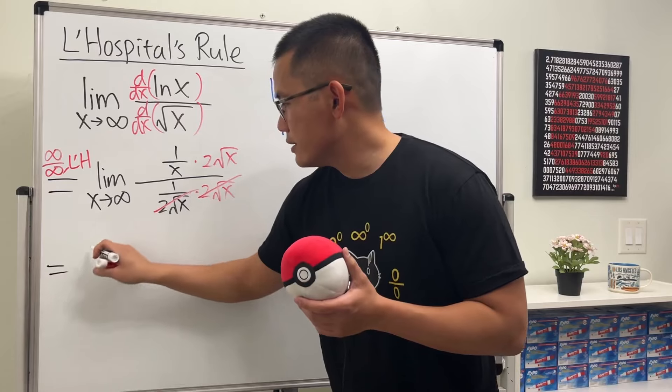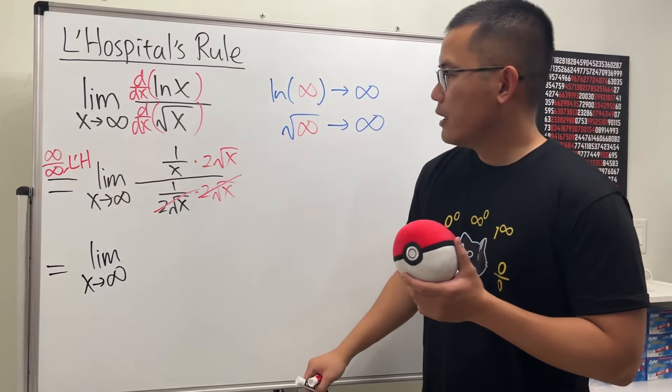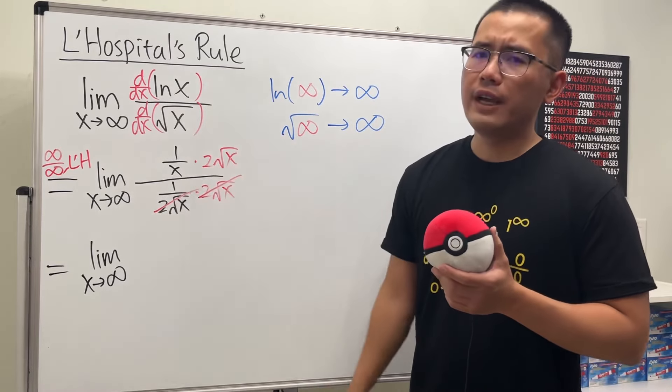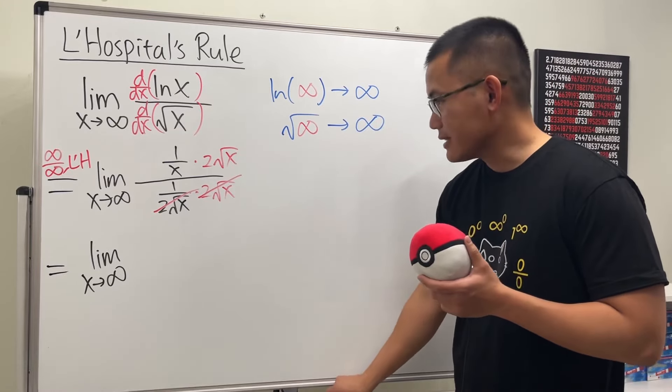So this is just going to be the limit as x approaching infinity. We have the 2, but square root of x over x. Can we do anything with that? Yeah, let's have a look on the side real quick.